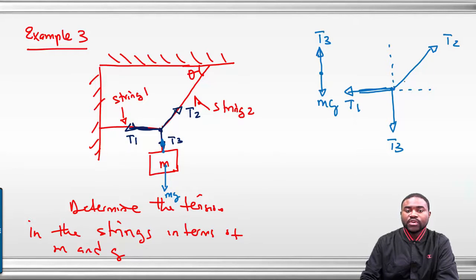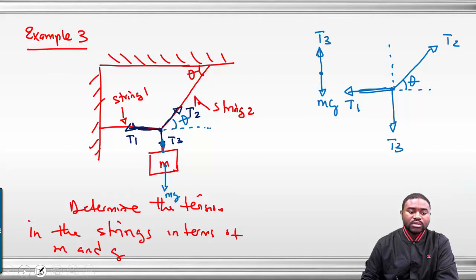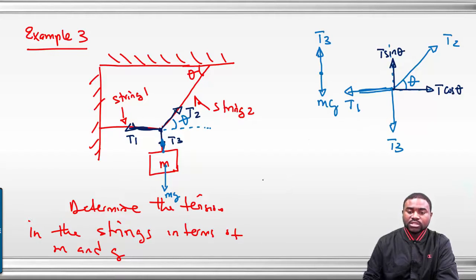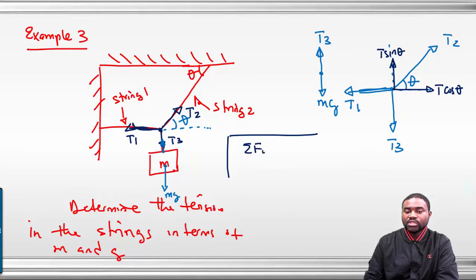It is also worthwhile for you to understand that this angle here is theta. If that angle is theta, then this angle should also be theta — geometry. Now, T2 can therefore be resolved into two components: you have T2 cosine theta. Understand that the system is in equilibrium because the system is at rest, which means that the summation of forces in the y direction is zero and the summation of forces in the x direction is zero.